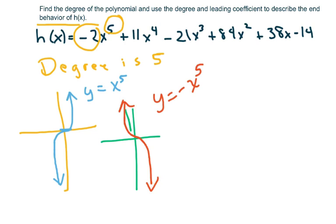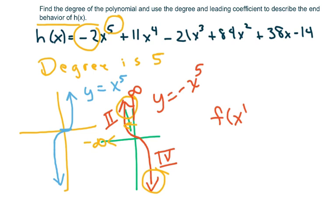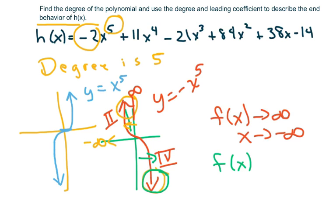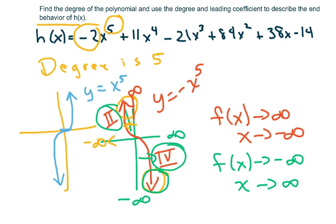Knowing that, whenever you graph this function you start in quadrant 2 and end in quadrant 4. For the end behavior: as x goes to negative infinity, y approaches positive infinity; and as x approaches positive infinity, y approaches negative infinity. It's basically telling you what quadrant to start and end in.